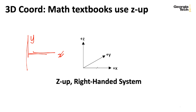Most mathematics textbooks take the X and Y plane and put that on the table, then use Z to go up and down, using a right-handed coordinate system. If you raise your right hand with your thumb along the X axis, your index finger along the Y axis, and your middle finger goes up the Z axis.